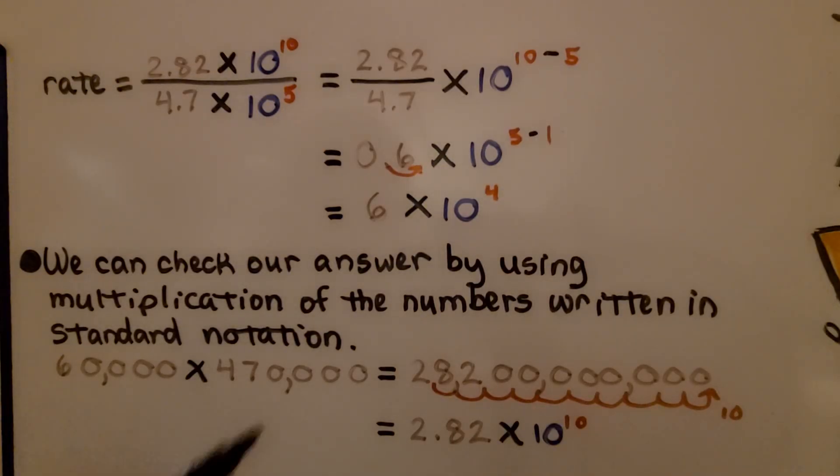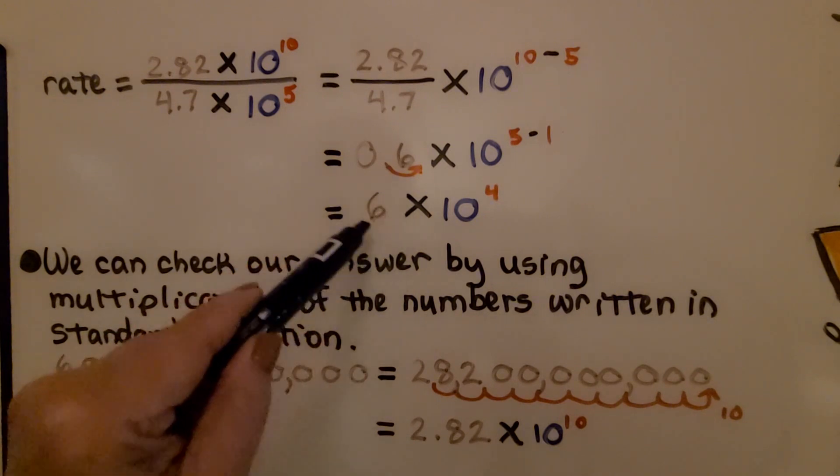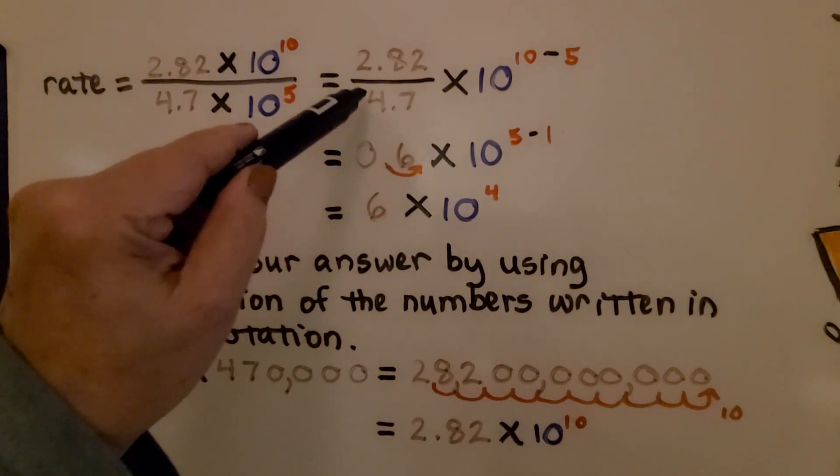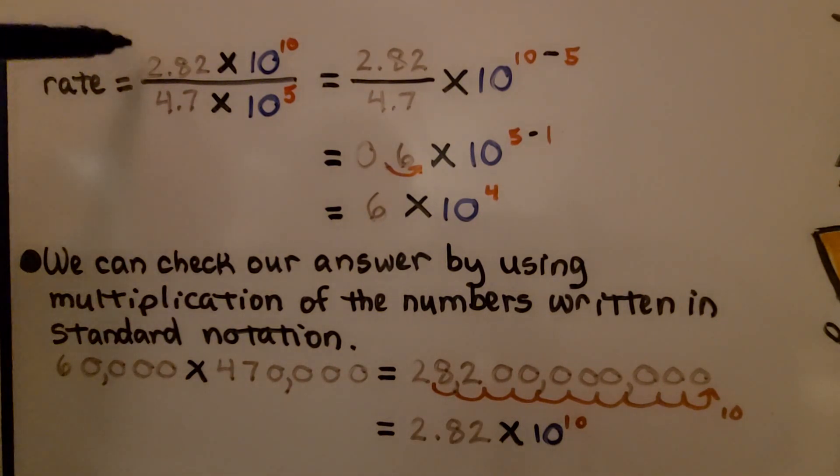So for our Neptune problem, we got 6 times 10 raised to the 4th power for our answer. We can check our answer by using multiplication of the numbers written in standard notation. We multiply this answer by the 4.7 times 10 to the 5th power, which is 470,000. And we're going to get 28,200,000,000, which is 2.82 times 10 raised to the 10th power, which was our numerator. It was our distance in our problem. We know we did it correctly because all the numbers match.